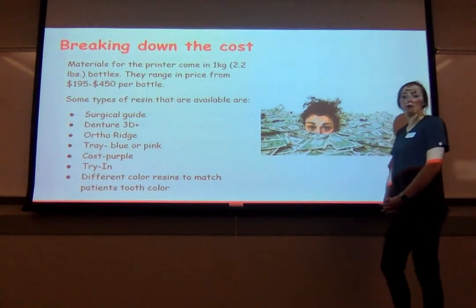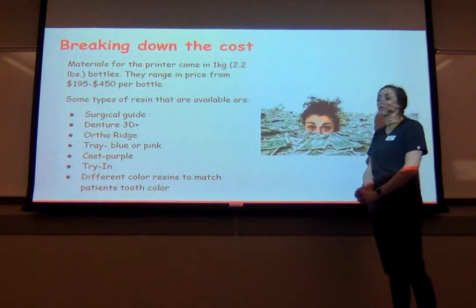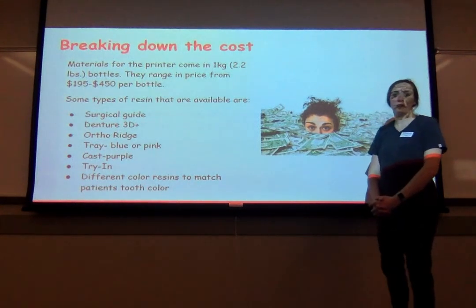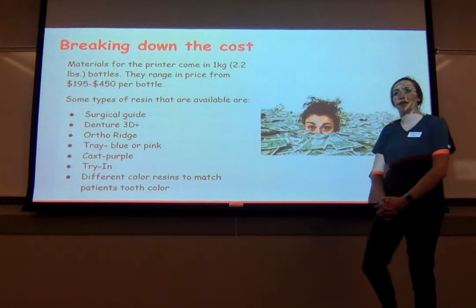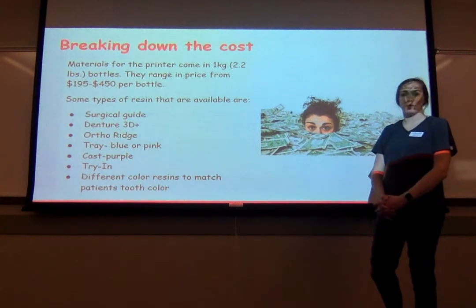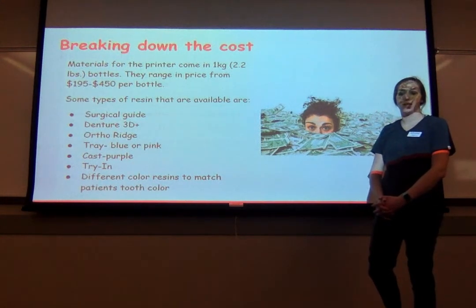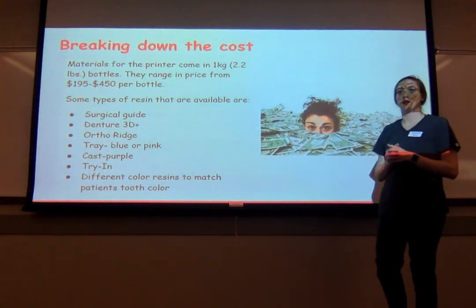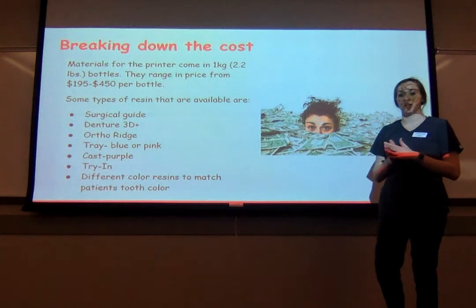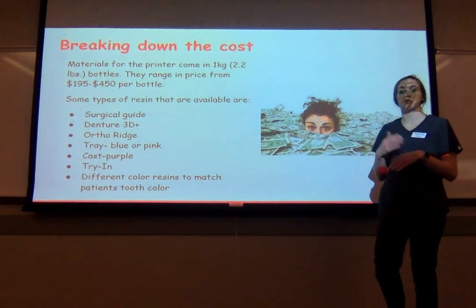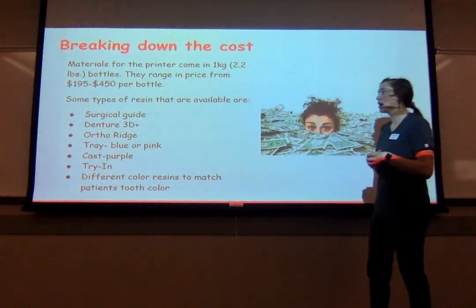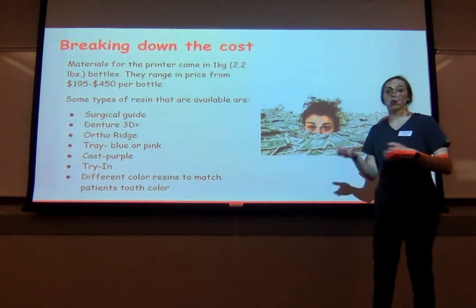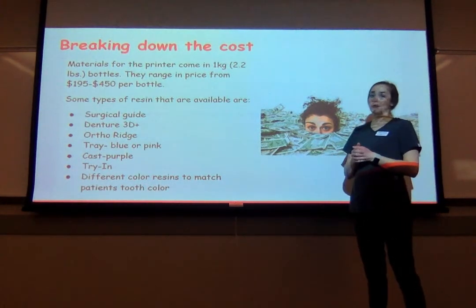Breaking down the cost a little bit more — the bottles of material that you would need range from $195 to $450, and that depends on the type of material you need and the color you would select. How much you can get out of each bottle depends on how much you're printing, what you're printing, and if you're needing to do remakes. It's very easy to go back and remake something if it isn't fitting, but if you're doing that a lot, you're going to be using more materials and need more bottles quicker.